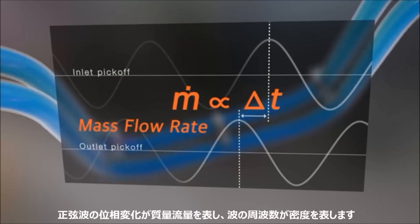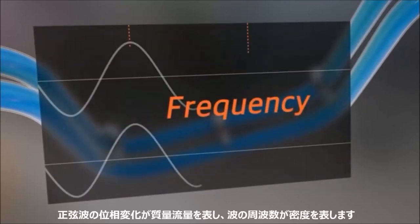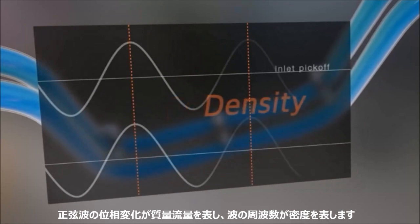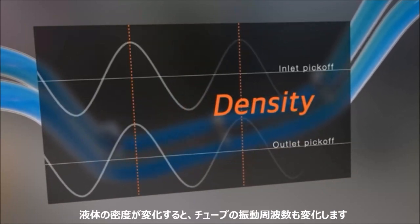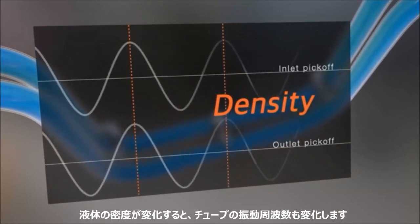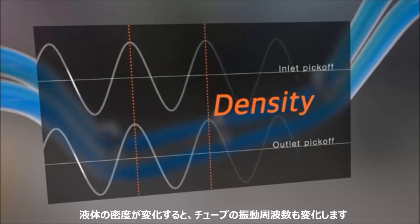While the sine wave phase shift indicates mass flow, the wave frequency indicates density. When the liquid density changes, the vibrating frequency of the tubes also changes.